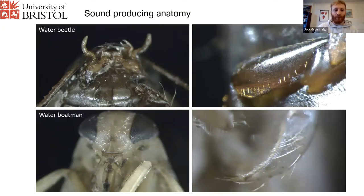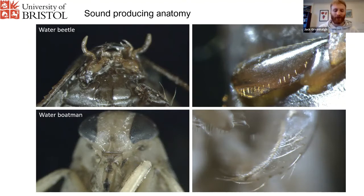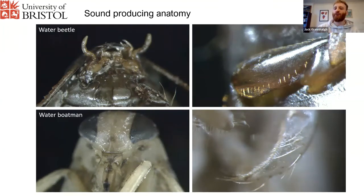Insects produce sound in a process called stridulation, which I think is a fantastic word. It means rubbing two hard body parts together — kind of like one of those wooden frogs with a ridge back. These are some microscope images I took of a water beetle on top and a water boatman on the bottom — some of the key sound-producing insect groups in fresh waters. This is their sound-producing anatomy: ridged structures called files, scrapers, and plectrums, which they rub together to produce sounds.